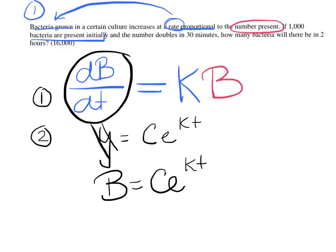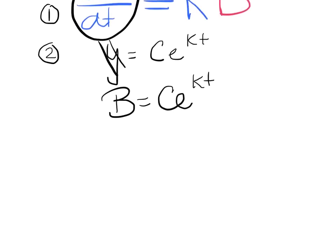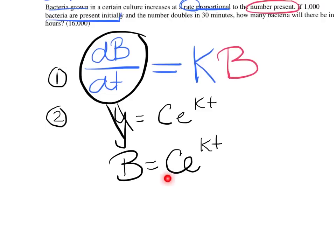Which of these variables stands for initial? That's something you should know from probably algebra 1. That coefficient here is our initial value. So I can say B equals 1,000e^(kt).